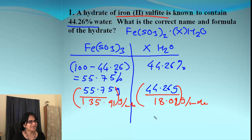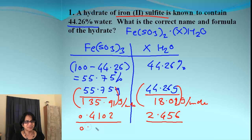When we divide that, you're getting 0.4102 and then this is 2.456. The next step is divide by the smallest, which is 0.4102. This is equal to 1. And this is roughly 5.987, which I can round up to 6.